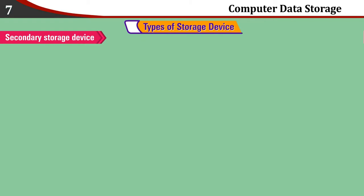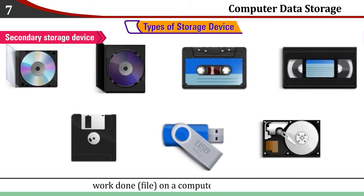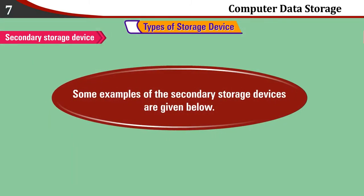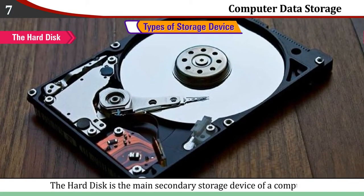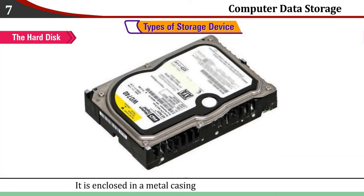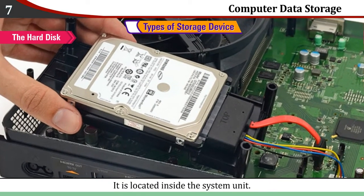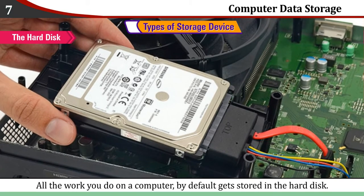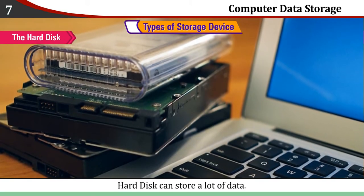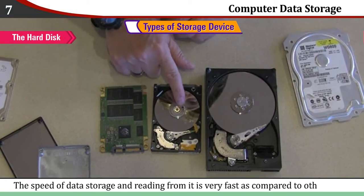Secondary Storage Device: The secondary storage device is used to store the work done on a computer permanently. The hard disk is the main secondary storage device of a computer. It is enclosed in a metal casing called a hard disk drive and is located inside the system unit. All the work you do on a computer by default gets stored in the hard disk. It can store a lot of data, and the speed of data storage and reading is very fast compared to other disks.